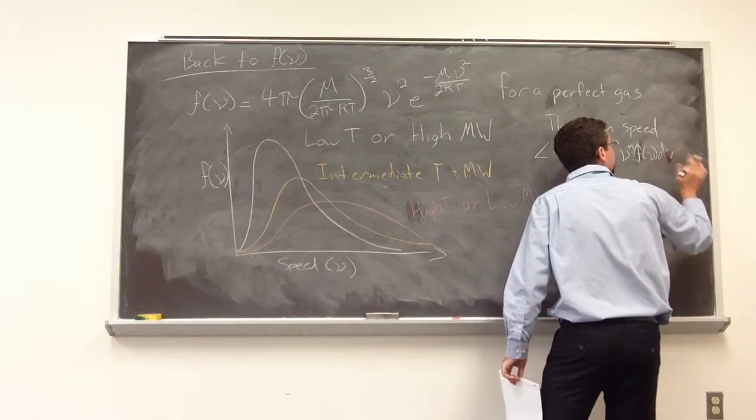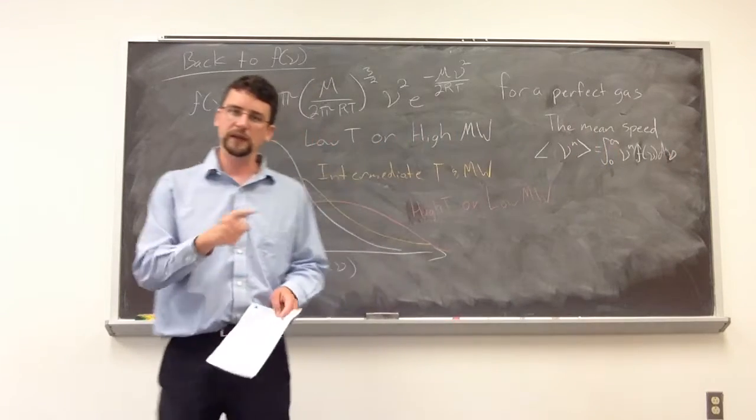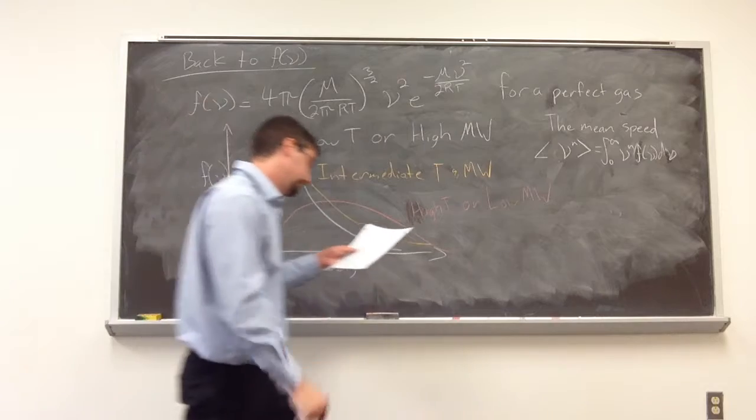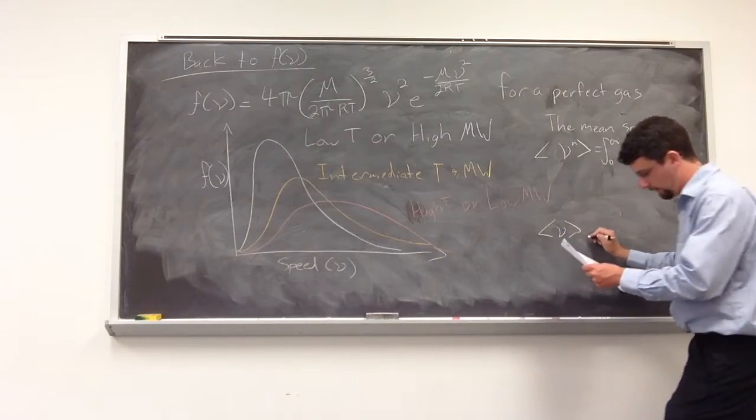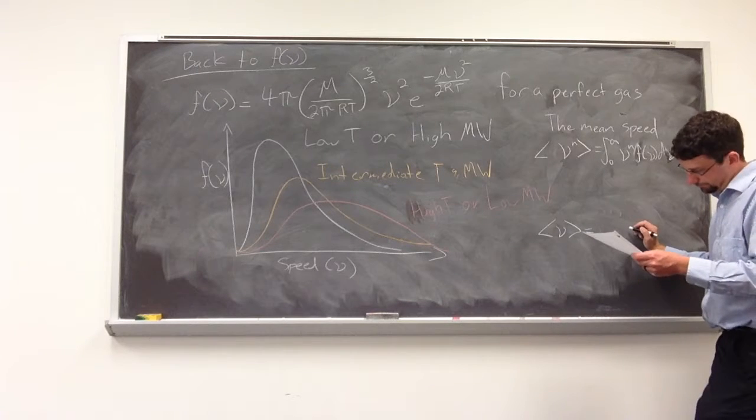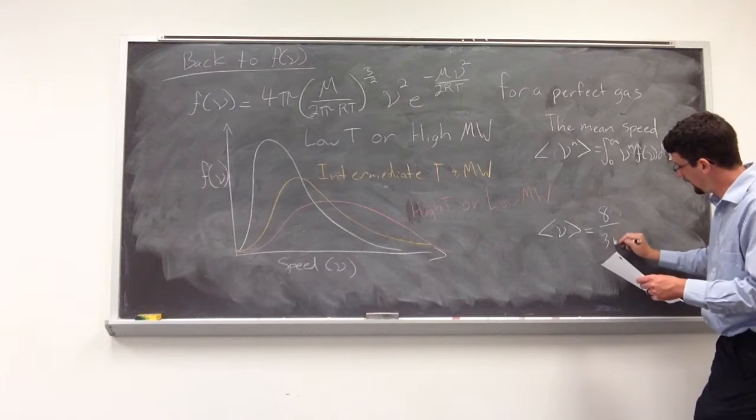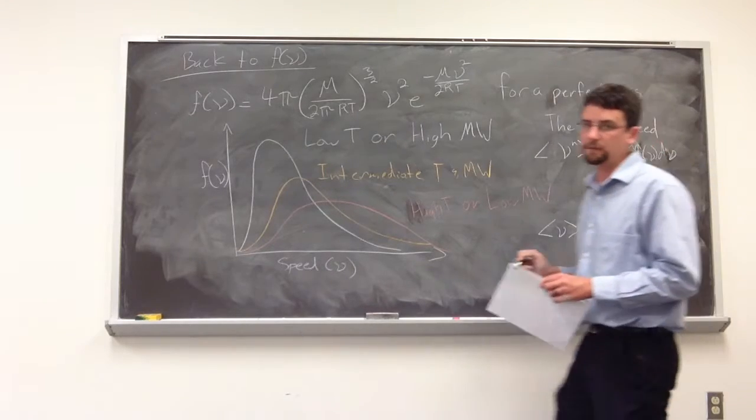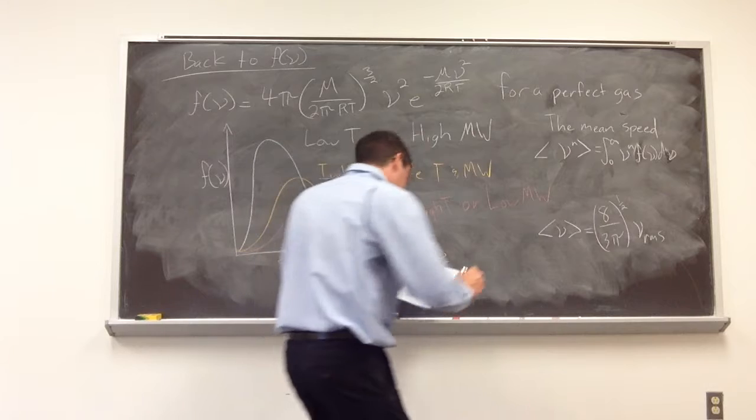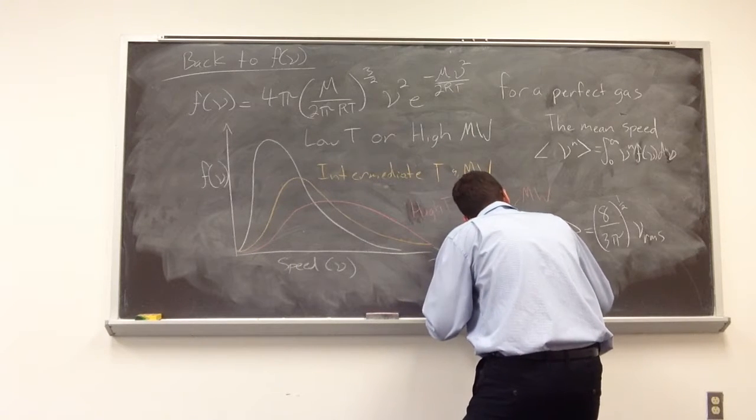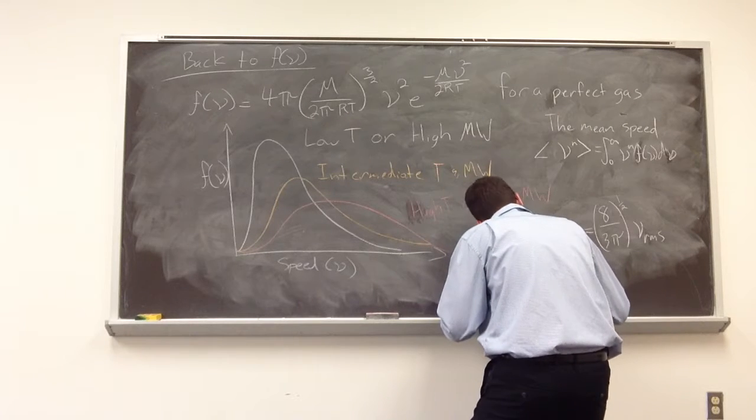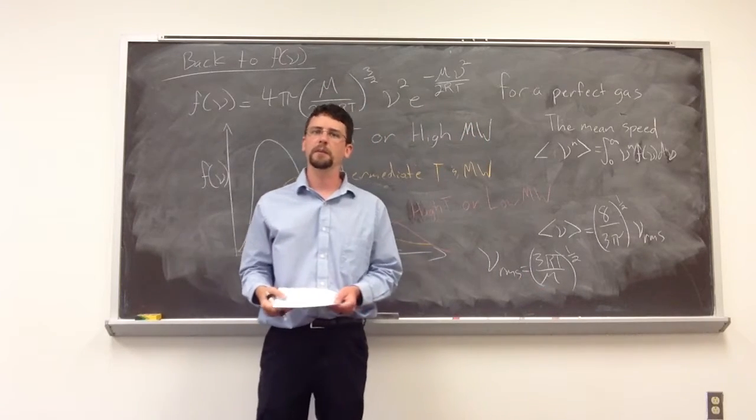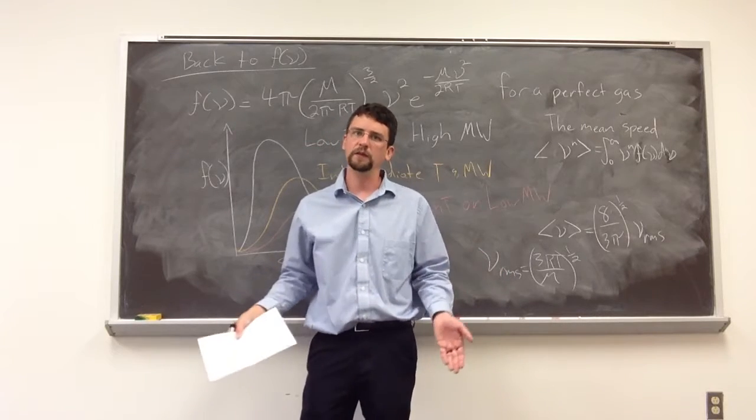D nu. And what we're really doing is we're looking at that volume element and seeing how far out do we need to go, and we're getting an average that way. For a perfect gas, it ends up just being a constant. It ends up being 8 over 3 pi raised to the 1 half times root mean square speed for a perfect gas. How do we get that root mean square speed? Well, for a perfect gas, that's equal to 3 RT over the molecular weight, all raised to the 1 half. So those speeds become important. The average speed usually dictates how the behavior of the system is.